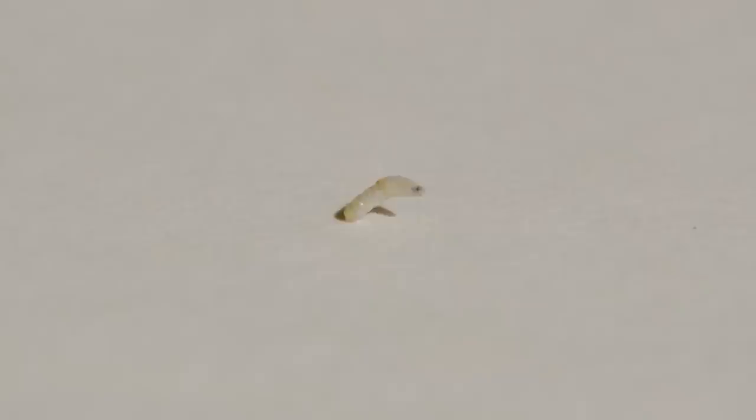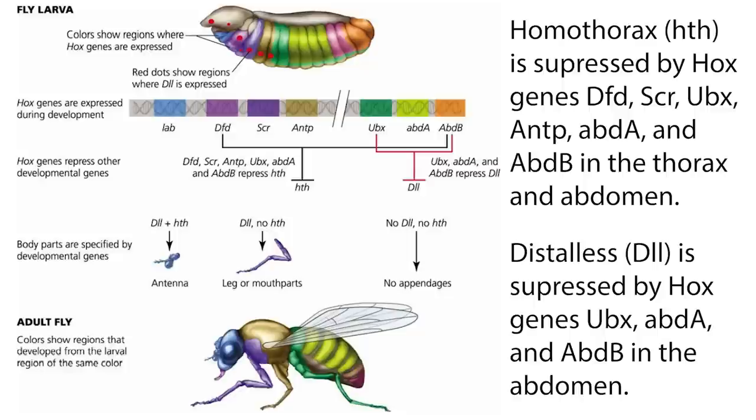A great example of the hierarchical nature of these gene regulatory networks with certain genes controlling the expression of certain other genes are what we call Hox genes, which control the general body plan of an animal. Hox genes tell an embryo what parts of the body to grow where. Think about this. Every cell in a fly larva has the exact same DNA, but certain Hox genes only allow certain parts of that DNA to be expressed in certain parts of the larva. Let's look at two genes in particular, distalus and homothorax, which control the production of antenna and legs.